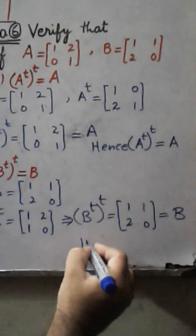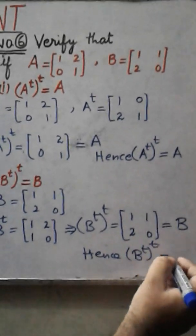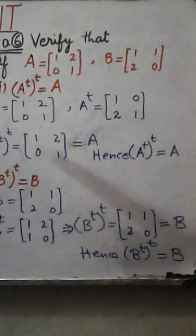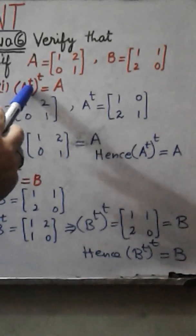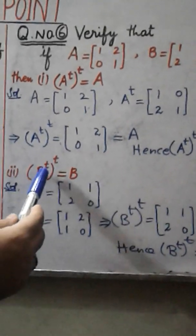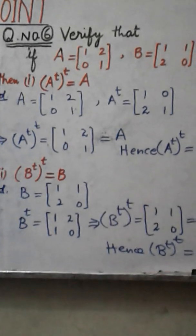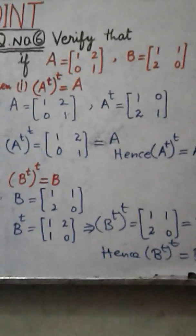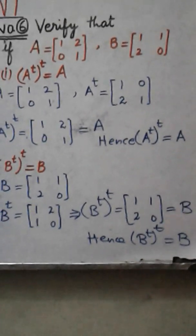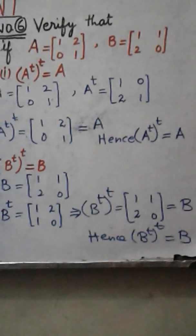Hence we can say that B transpose transpose is equal to B. We have proved in question number 6: part one, A transpose transpose is equal to A, and in part two, B transpose transpose is equal to B. I hope you have learned question number 5 and 6 of exercise 1.2 easily. If you have any questions, write your feedback in the comment box. Thank you so much, take care, Allah Hafiz.